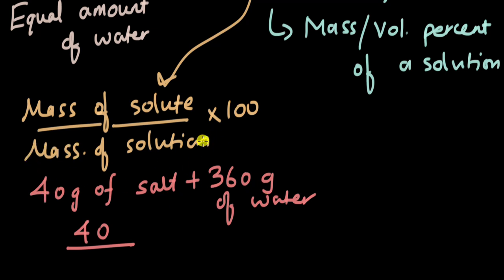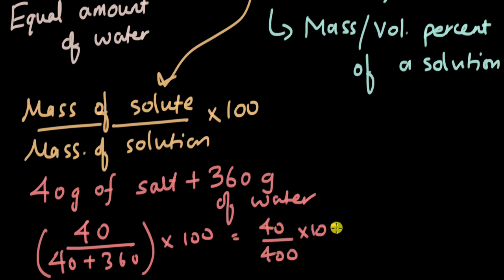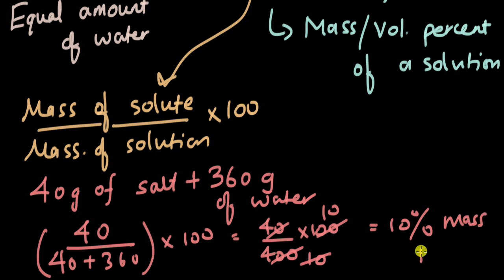The denominator is the mass of solution, not the mass of solvent — both salt and water make up the solution. So we have 40 plus 360, multiplied by 100. Working this out: 40 divided by 400 into 100 gives us 10 percent. This is a 10 percent mass percentage of the salt water solution.